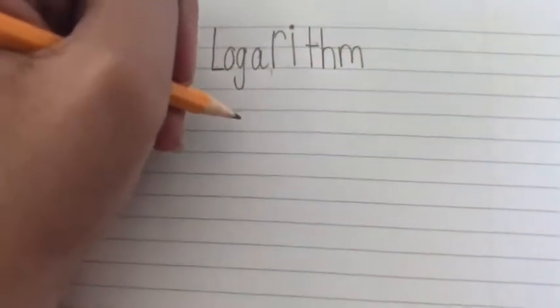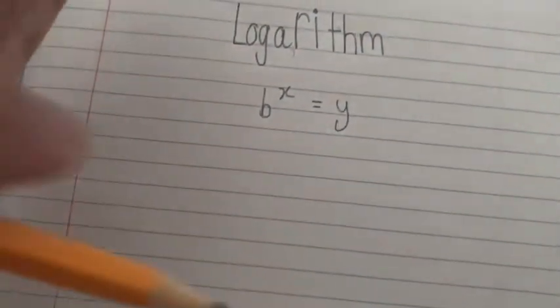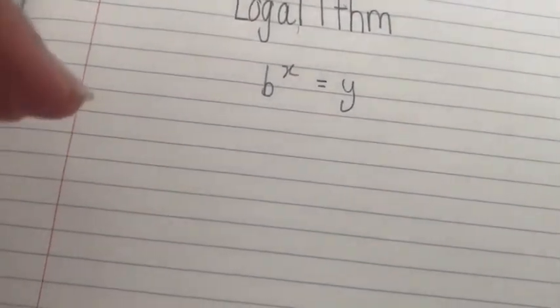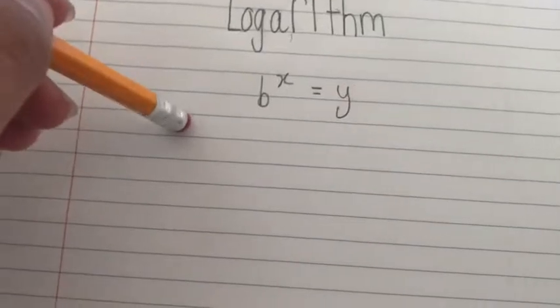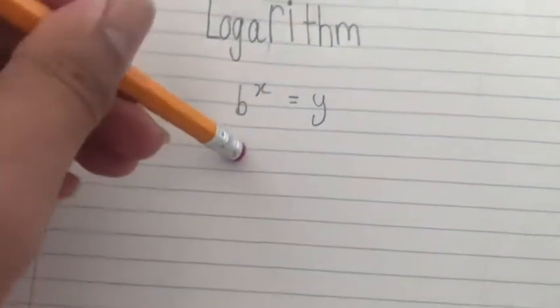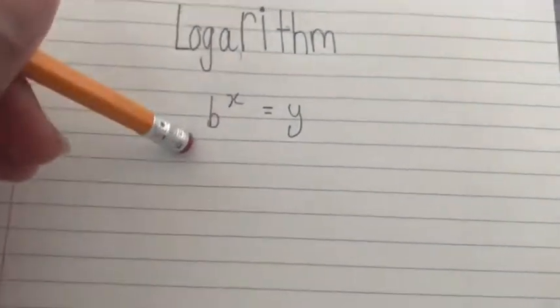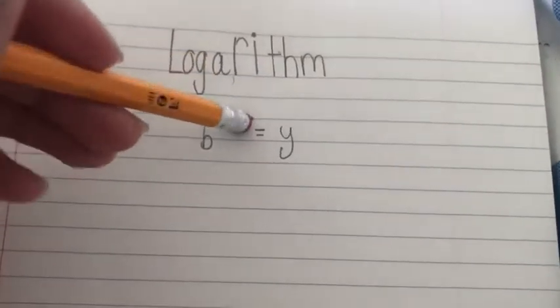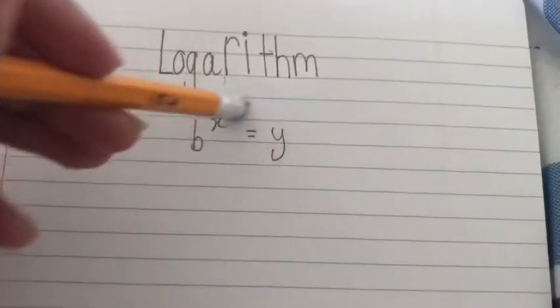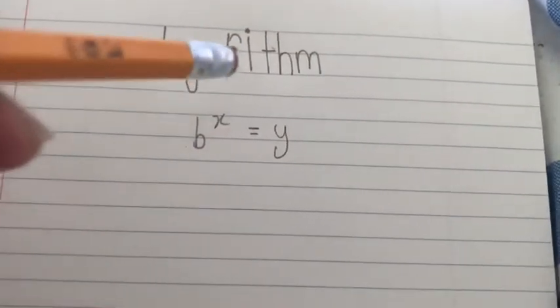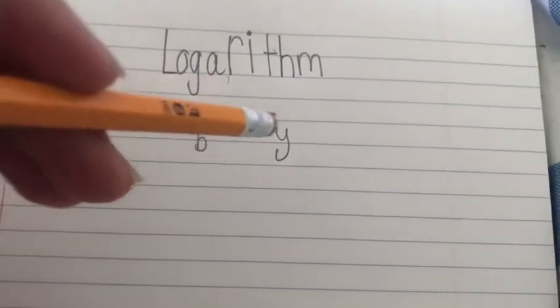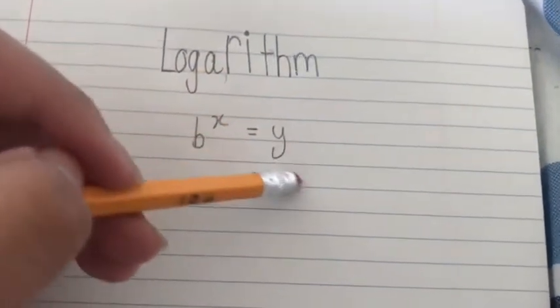The most basic formula you will use in logarithms is b to the power x equals y. It's basically the exponent form, but you just switch the places up. So b is any number to the power of x, which is the thing you're trying to find when solving a log function, equals y, which is the answer.